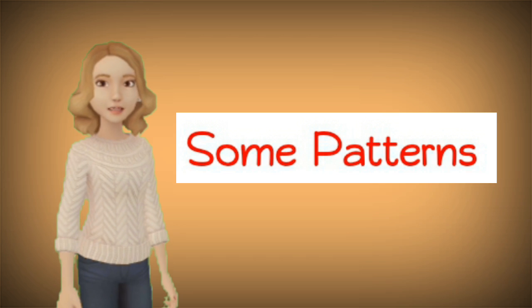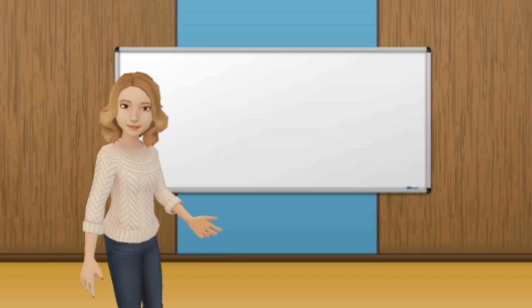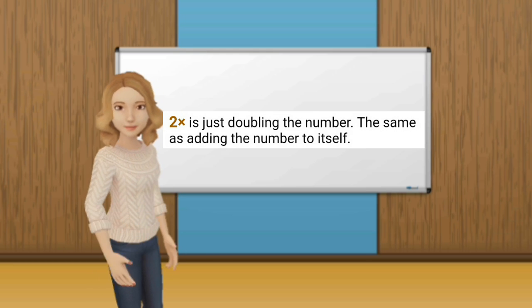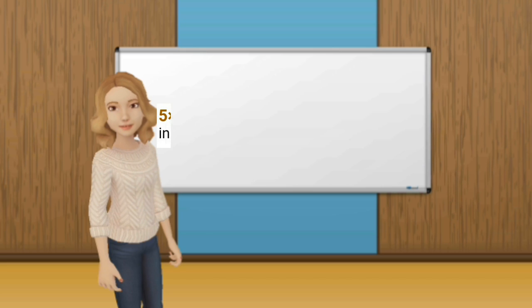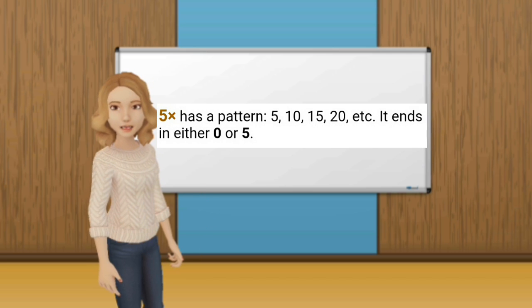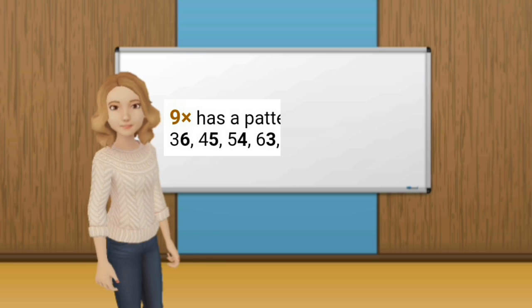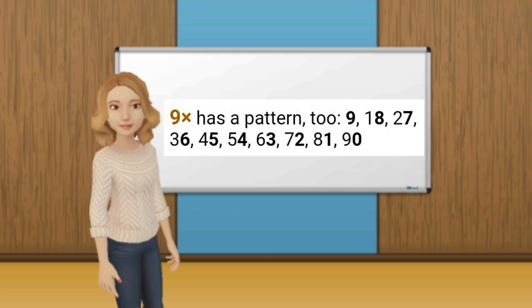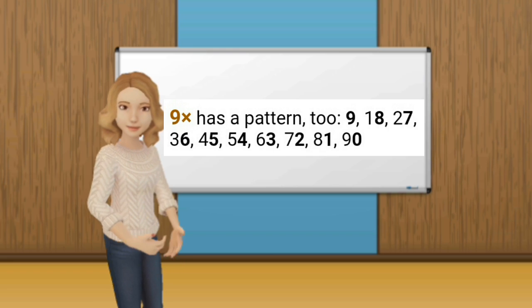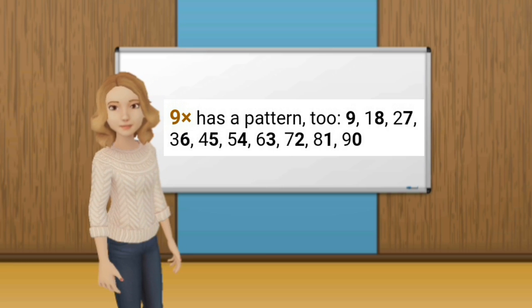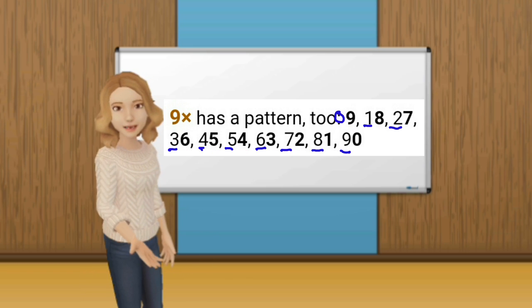There are also some patterns that can help us learn the times table easily. The pattern for the 2 times table is just doubling the number, the same as adding the number to itself. The 5 times table has the pattern 5, 10, 15, 20, etc. — it ends in either 0 or 5. The pattern for the 9 times table is 9, 18, 27, 36, 45, 54, 63, 72, 81, and 90 — the ones digit decreases by 1 and the tens digit increases by 1.